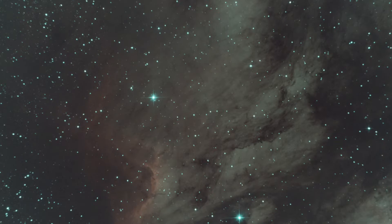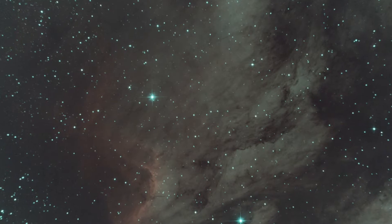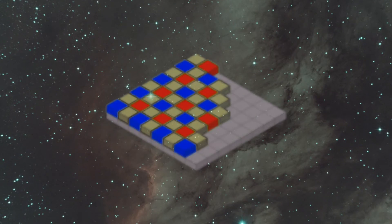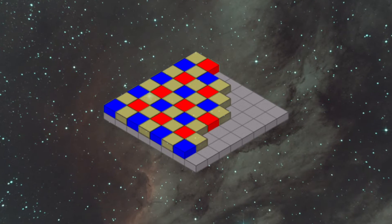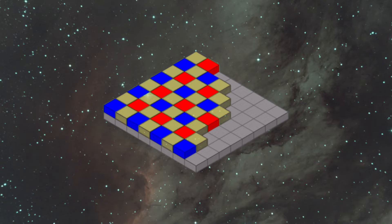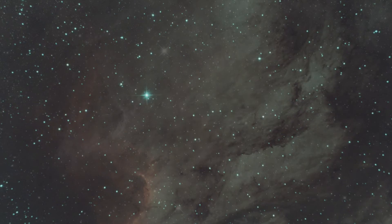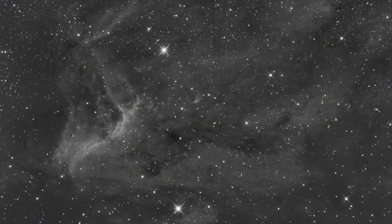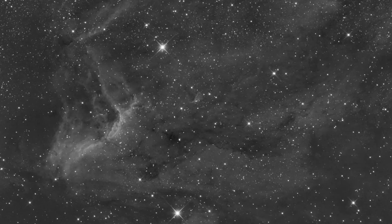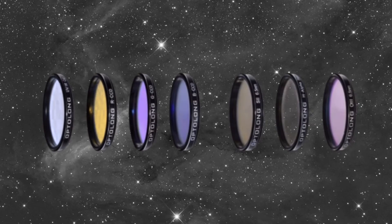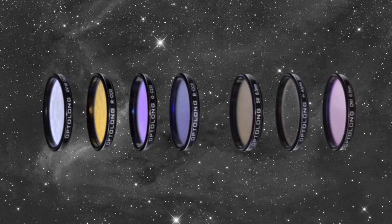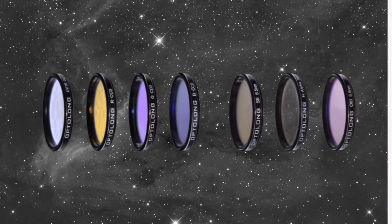Let's break down what these two types of imaging are. One-shot color cameras capture all of the color data in a single exposure. They have a Bayer matrix filter over the sensor, which separates the light into red, green, and blue pixels. On the other hand, mono cameras capture light without a Bayer matrix filter, requiring separate exposures through red, green, and blue filters to create a color image.